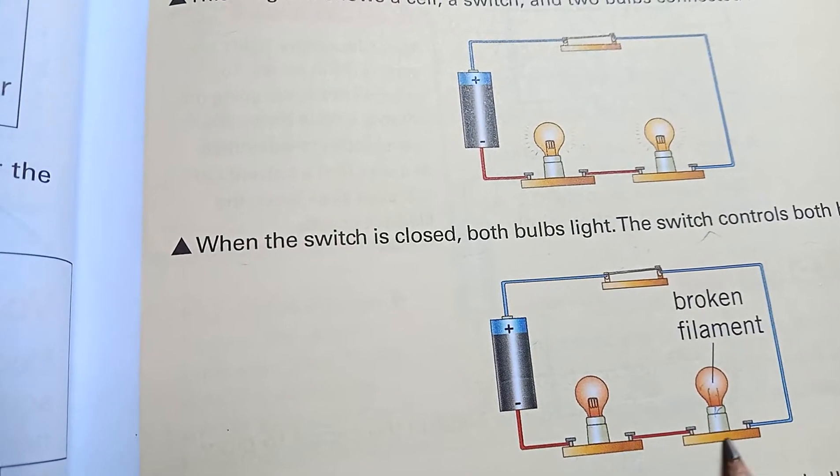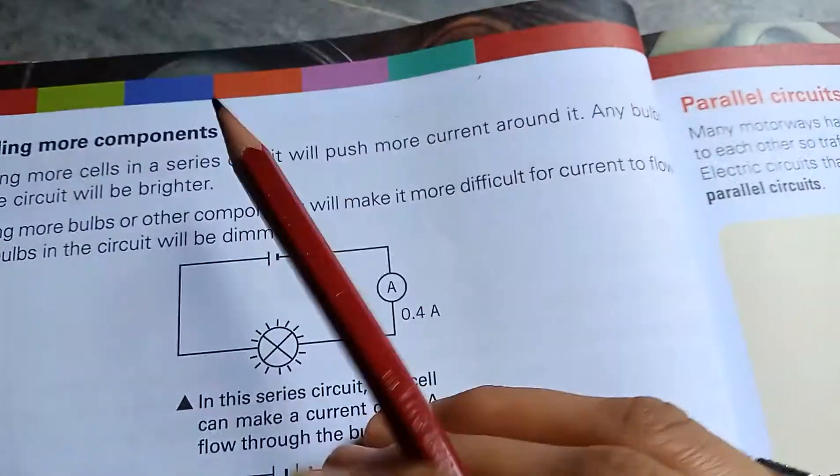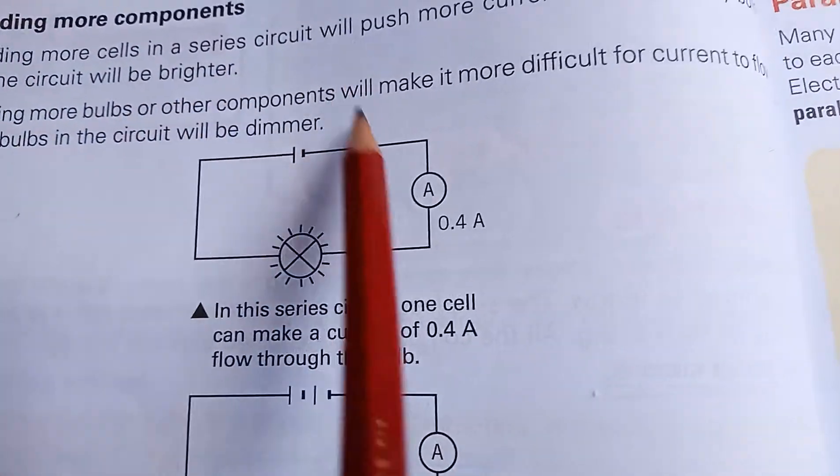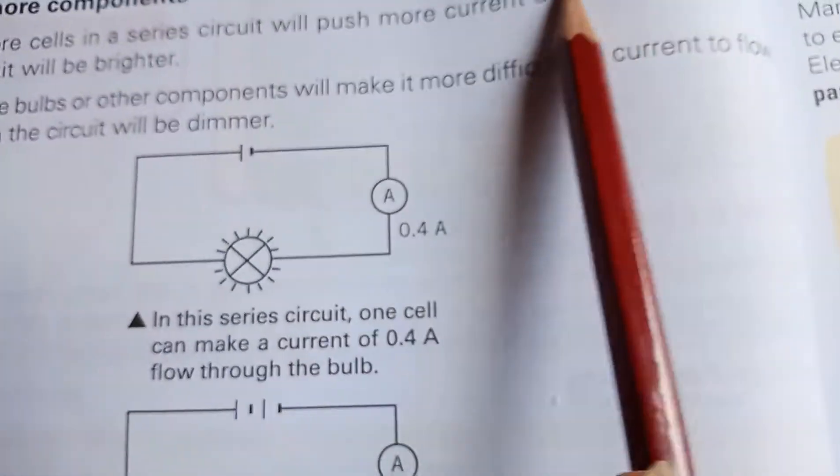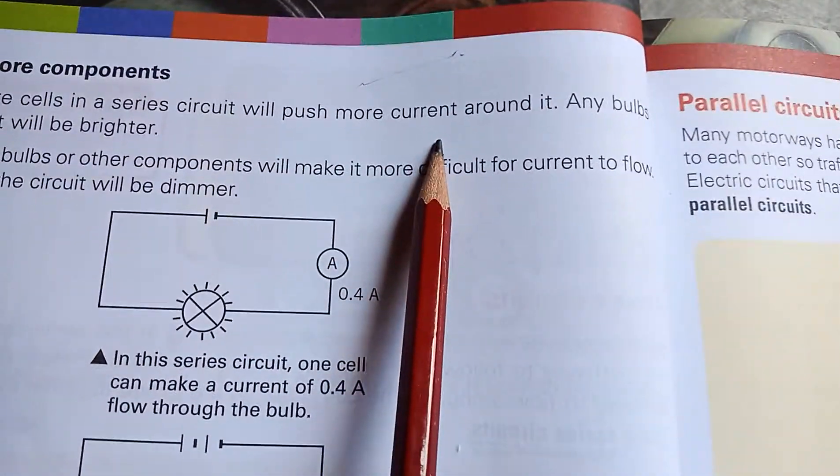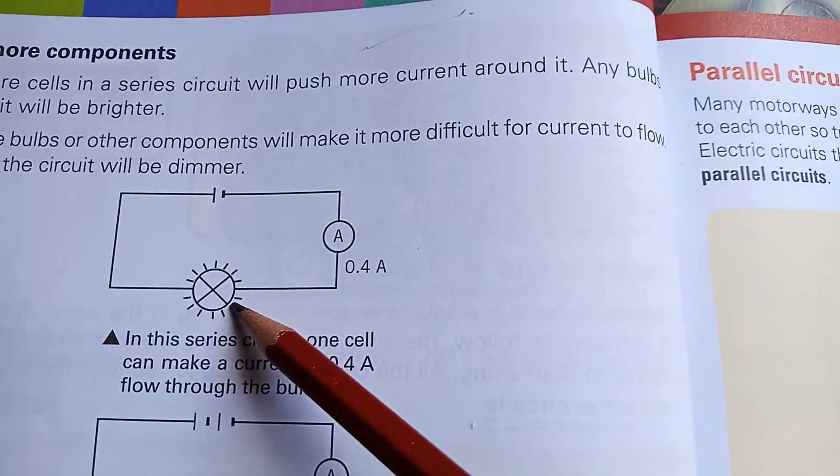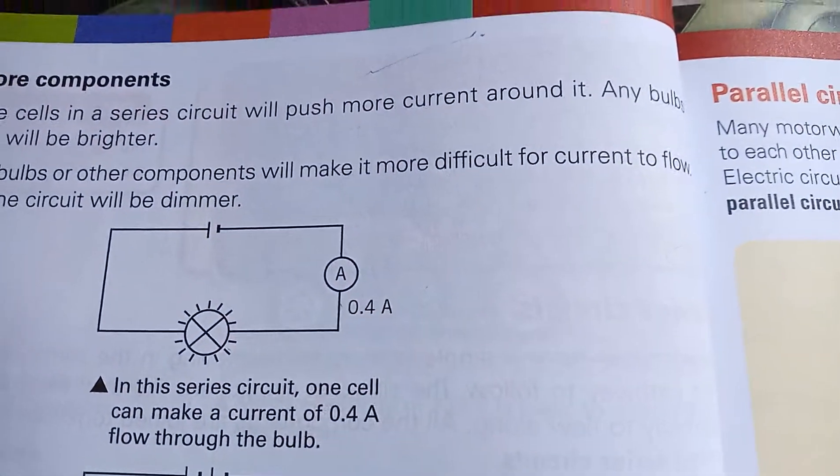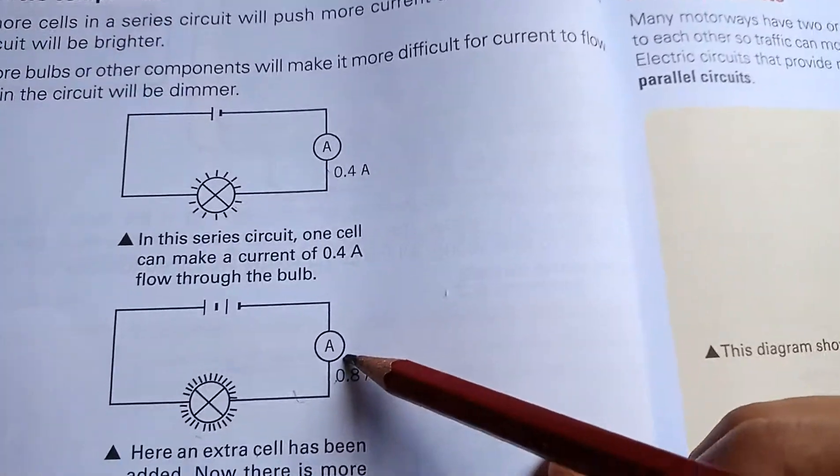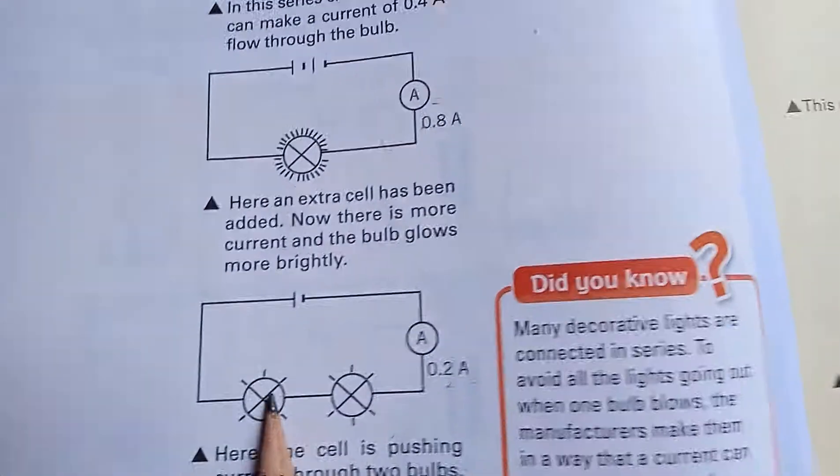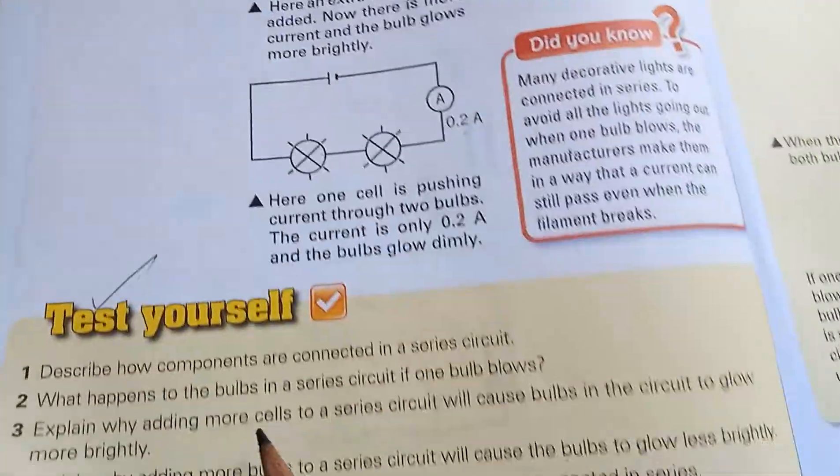Adding more components: If you add more cells into the circuit, they will generate more current and the bulb will light brighter. If you add more bulbs and do not add more batteries, the bulbs will light dimmer. Here are a few questions you have to answer.